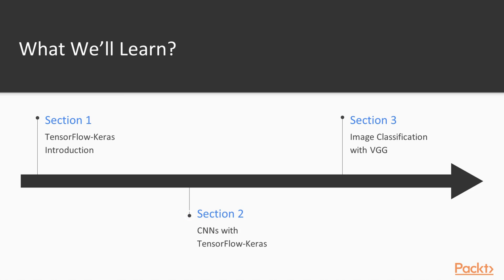In the second section, we will learn about convolutional neural networks and their different types of layers, activation functions, and pooling functions, and how to construct them with the TensorFlow Keras functional API. We will also look at different computer vision datasets and learn about different methods to apply data preprocessing and data augmentation.